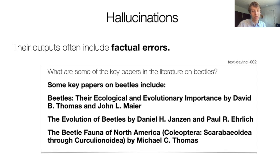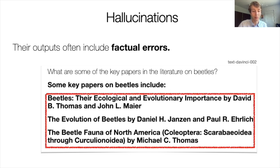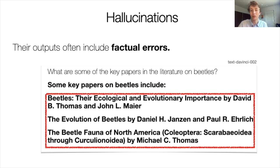But language models are just as capable of producing hallucinations, meaning their outputs often include convincingly asserted factual errors. Here I ask for a list of papers in the literature on beetles and it gives us three reasonable-looking papers, but as you've learned to expect by now, all three of these articles are nowhere to be found on the internet. Nevertheless, there aren't any immediately obvious clues that the language model is hallucinating.